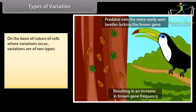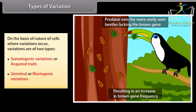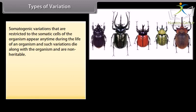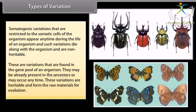On the basis of the nature of cells where variations occur, variations are of two types: somatogenic variations or acquired traits, and germinal or blastogenic variations. Somatogenic variations are restricted to the somatic cells of the organism, appear any time during the life of an organism, die along with the organism, and are non-heritable. Germinal variations are found in the gene pool of an organism, may be already present in ancestors or occur any time, are heritable, and form the raw materials for evolution.